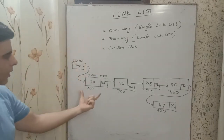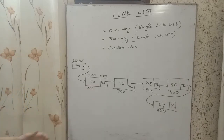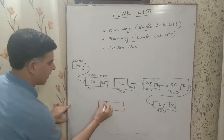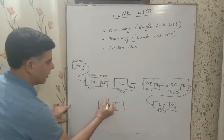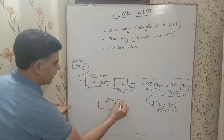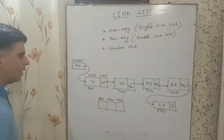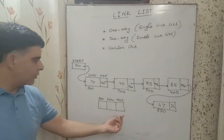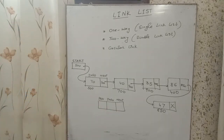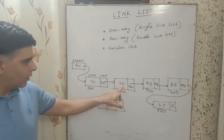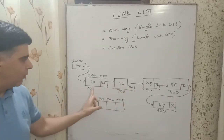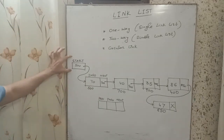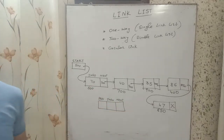In a two-way linked list, each node has at least three parts: an info part, a next part, and an additional pointer called the previous part. The info part contains the information, the next part contains the address of the next node, and the previous part contains the address of the previous node. This allows traversal both from the first node to the last and from the last node back to the first — that's why it is also known as a double linked list.